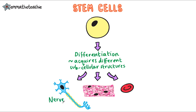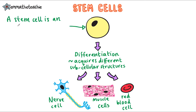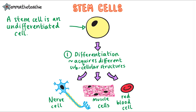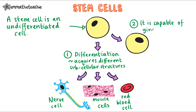On the left we've got a nerve cell, in the middle are muscle cells, and on the right is a red blood cell. This unspecialized cell is a stem cell. A stem cell is an undifferentiated cell and they've got two main functions: differentiation to produce different cell types, and the ability to give rise to many other stem cells — i.e. it can regenerate new stem cells.